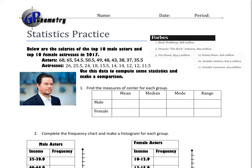We want to find the mean. For the males, mean is total divided by count — the total comes out to be 488.5 divided by 10, giving us 48.85. For the females, we total all the salaries and get 172.5, divided by 10, giving a mean of 17.25.